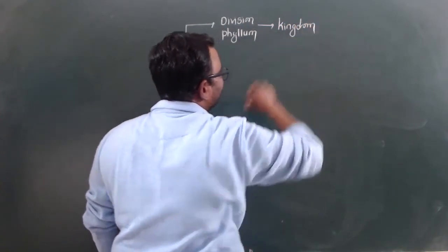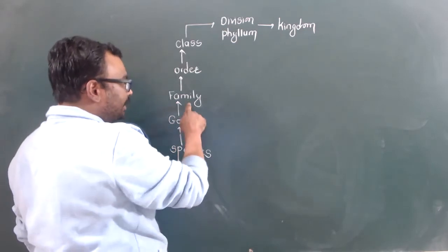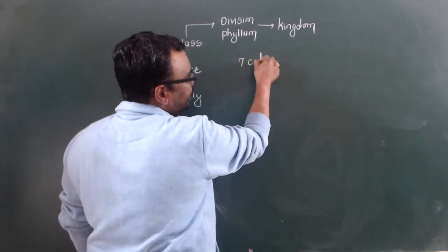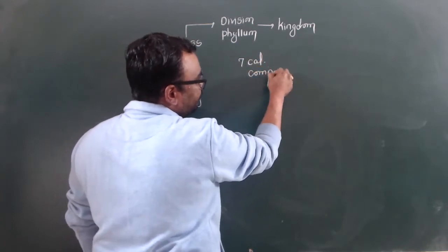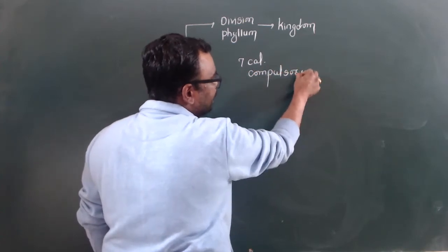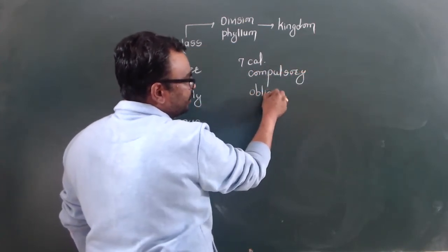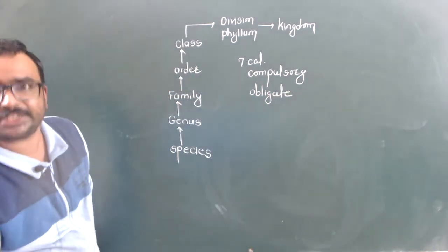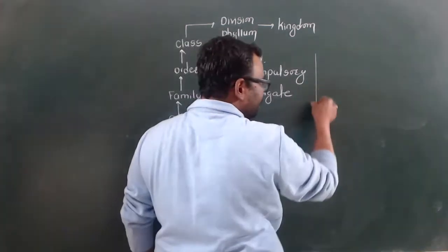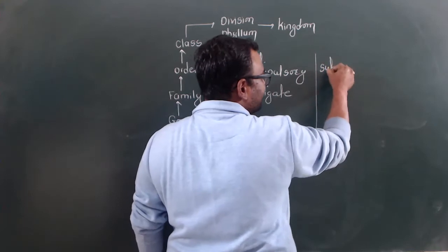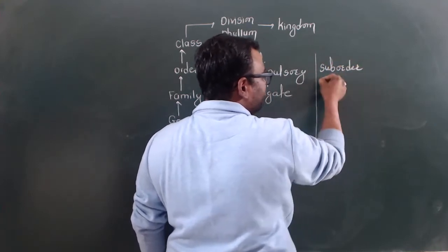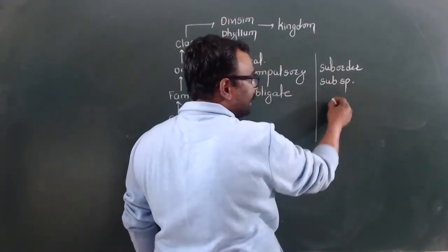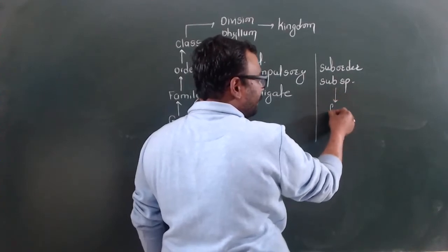There are seven major hierarchical categories in classification, which are compulsory or obligate. Additionally, there are optional facultative categories such as sub-order or sub-species, which are divisions within the main obligate categories.